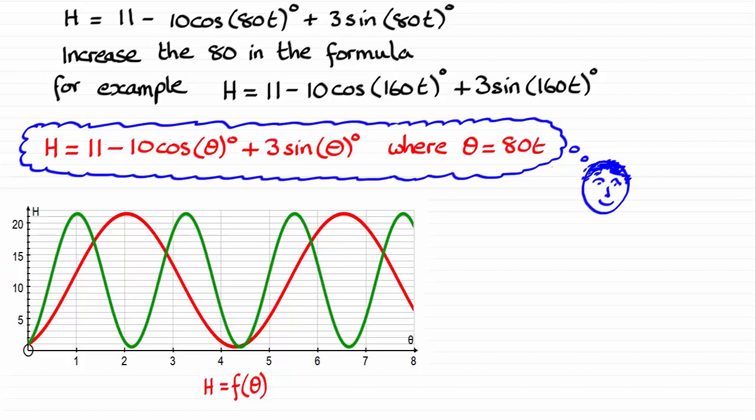And what we've effectively got is a stretch of the original curve, H of F of theta. This example I've given you here is H of 2 theta. I've doubled this value here, and I've got my 160T in place.